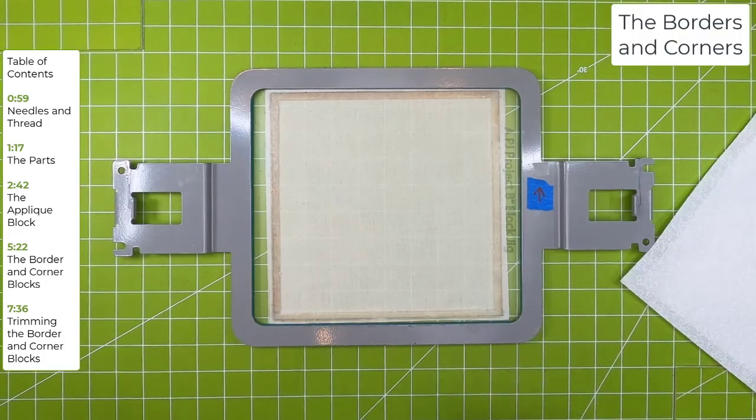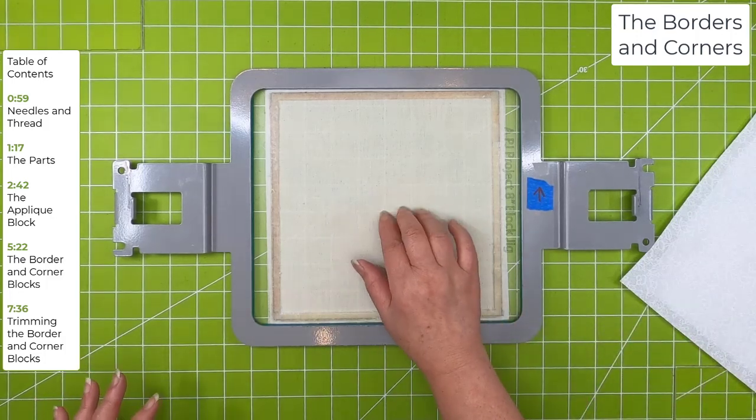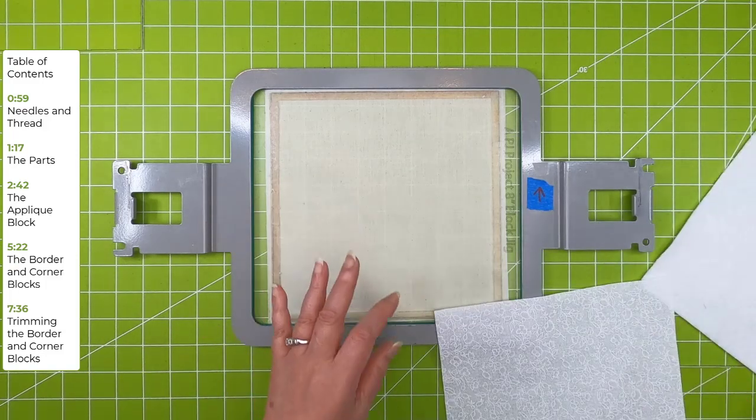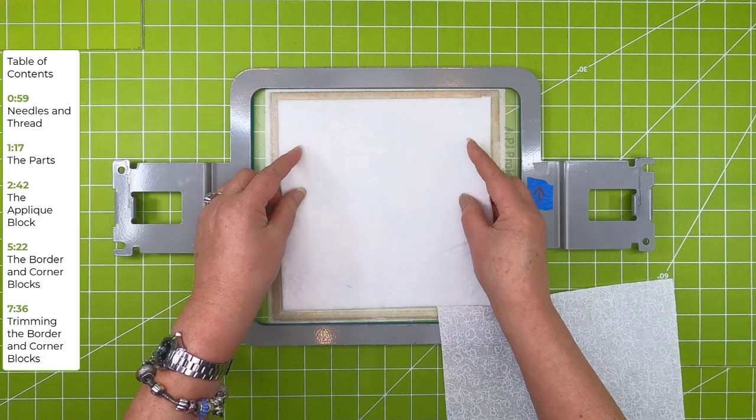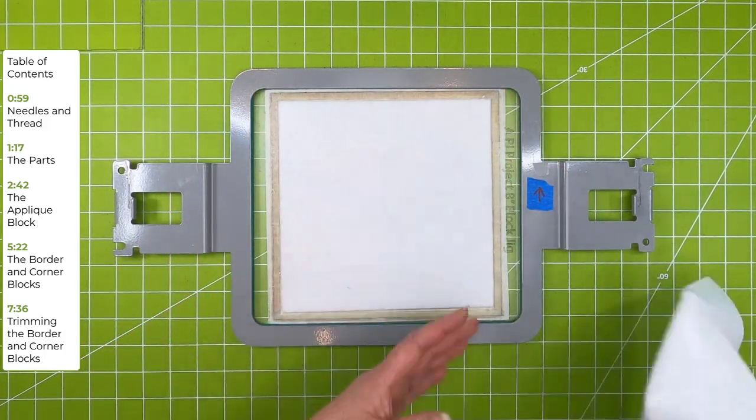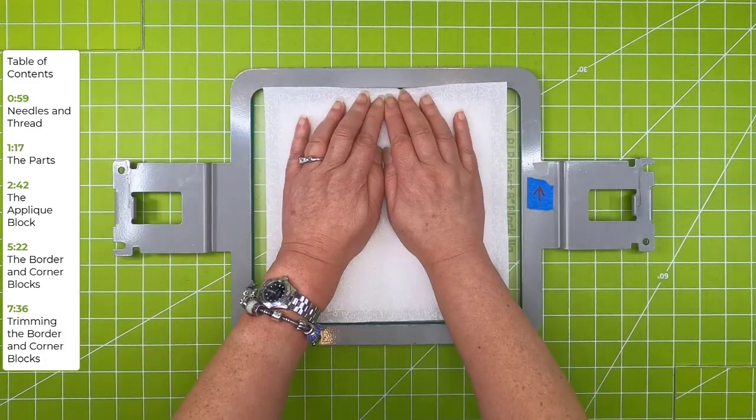This is the setup for doing either the borders or the corners. The jig is set up exactly the same as the standard blocks. This, I'm just using a muslin back, but you could use a fashion fabric if you'd like. Your batting, again, cut smaller and it fits within that hole. And then your top block. So all of that is just like normal.